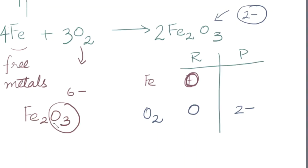Three oxygens, therefore, have a 6-. And in order to keep this compound neutral, two irons must have a 6+, which means that each of the iron has an oxidation state of 3+. So what's going on with the iron here? It's going from 0 to 3+. What do you think? Is that losing or gaining electrons?